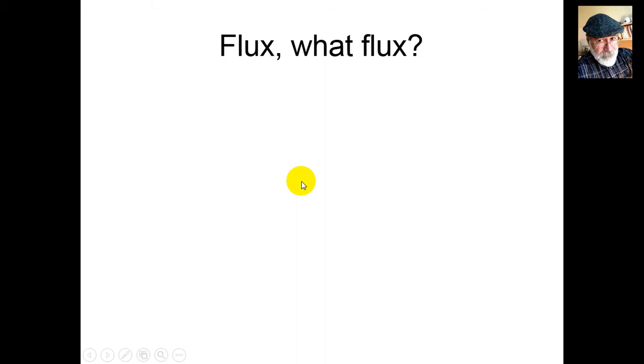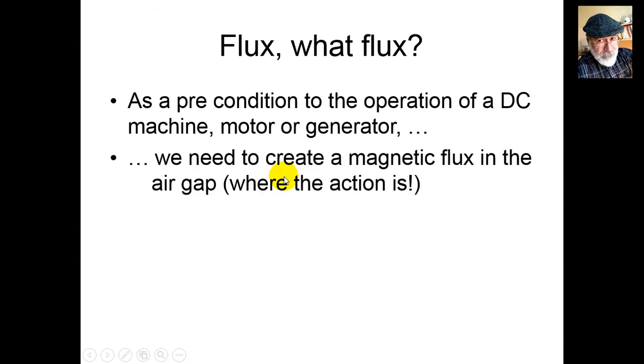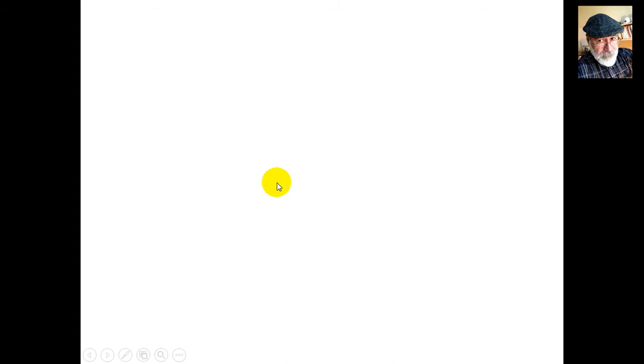What flux? As a precondition to the operation of the DC machine, either a motor or a generator, we need magnetic flux in the air gap, which is where that wire with its current will be, where the action is. How do we do that? We excite the machine.